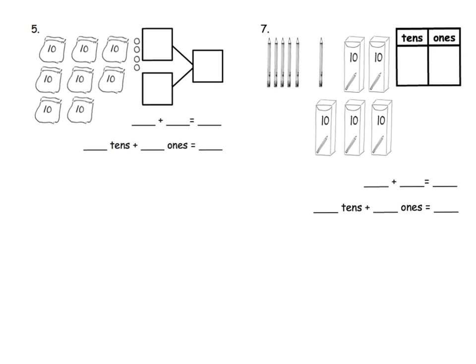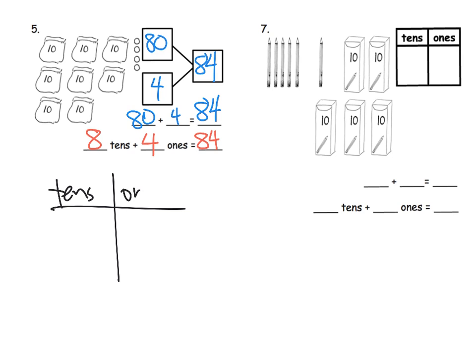We're going to begin by counting our 10s: 1, 2, 3, 4, 5, 6, 7, 8 — so we have eight 10s, which makes 80. I put it up there, but I could have put it down here. How many 1s do we have? We have four, so we have 84. So 80 plus 4 is 84. Hearkening back to that place value chart, we have eight 10s and four 1s, which gives us 84. If you need to, you can refer back to the 10s and 1s and say we have eight 10s and four 1s — that's what this is connecting to.